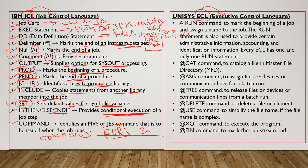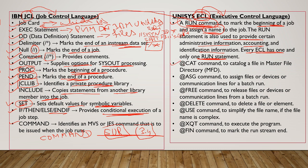In Unisys we have the RUN command, which is similar to the job card in IBM JCL. It marks the beginning of a job and assigns a name to the job. The RUN statement is also used to provide administrative information like accounting and identification information. Every ECL has one and only one RUN statement, just as JCL has only one job card.